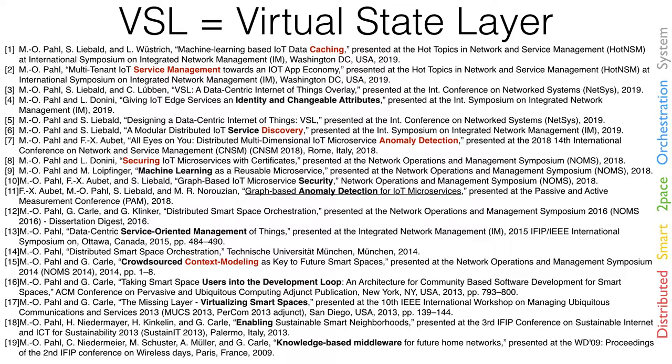Here you see some of the papers we have for this middleware. It started back in 2009. The main purpose of showing you this is, first of all, there's much more than I can tell you, and second, to show the path of development. It started with context modeling, then security became more important with anomaly detection, service discovery, service management, and caching — topics we are currently going into with our research.